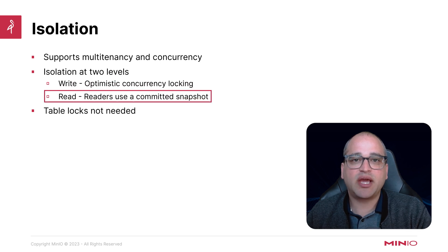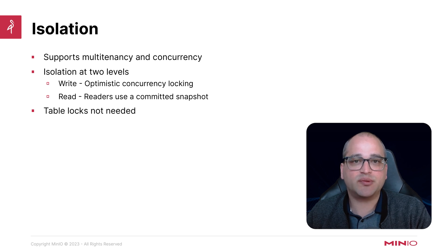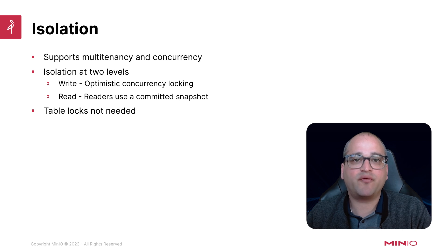At read time, we get isolation through our open table format by simply always doing reads from a single committed snapshot. Isolation is likewise a big deal. Without it, we can't confidently use our data lake for workloads where many order-sensitive changes might be happening at the same time. It's also worth noting that the mechanisms we use for isolation in a modern data lake are a considerable improvement from what was more common in the Hadoop, Hive, and HDFS era. In that era, we generally required the use of table locks, which forced readers and writers to wait in a queue before they could take over the lock and perform the necessary work.